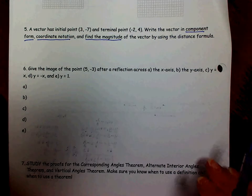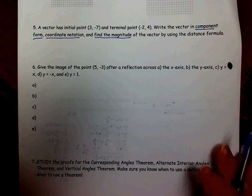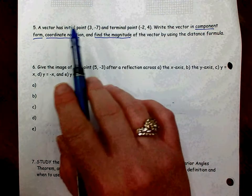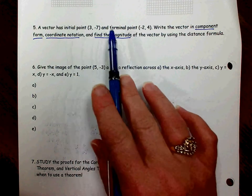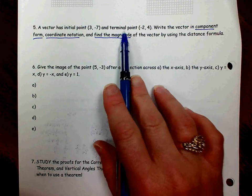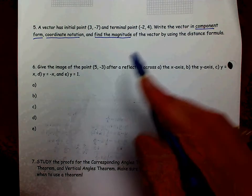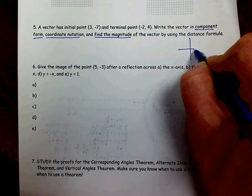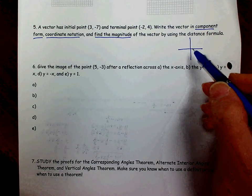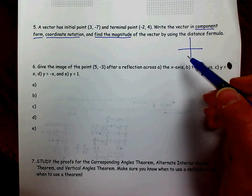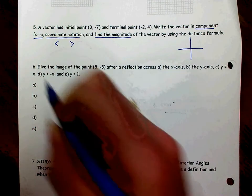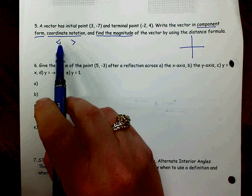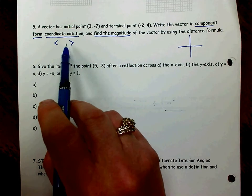So first let's look at component form. Remember component form can only be written for a translation. We are going from the point (3, -7), that's our initial point, that's where we start, and we're ending on the terminal point at (-2, 4). So if you kind of visualize those points on a coordinate plane, it might be helpful in coming up with the numbers for your component form. Remember component form uses angle brackets. The first number is your left or right movement. The second number is your up and down movement.